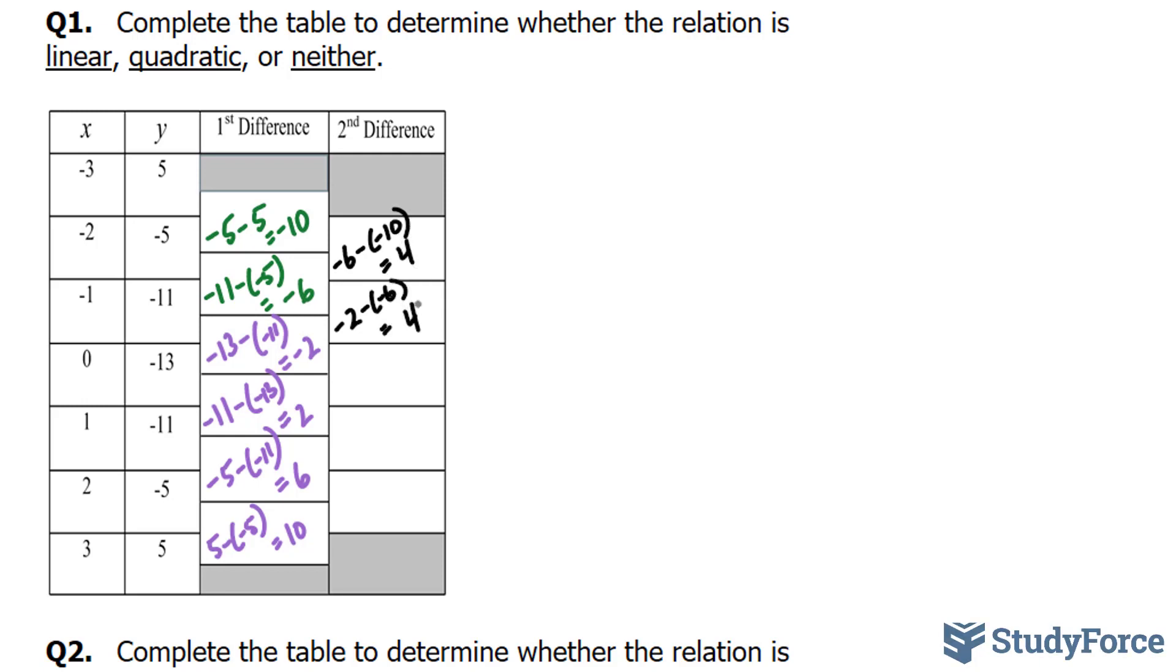So far, this looks like a quadratic relation. 2 minus negative 2 gives us positive 4. 6 minus 2 is positive 4. And 10 minus 6 is positive 4. Therefore, this table represents a quadratic relation.